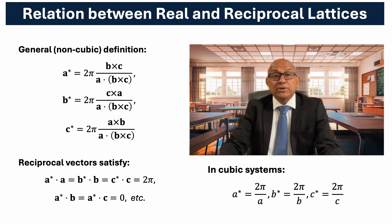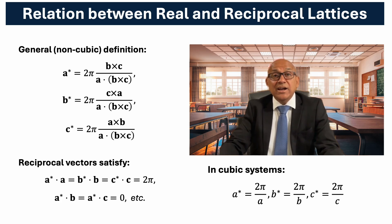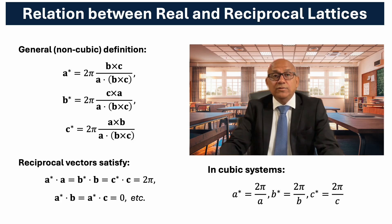A* equals 2π divided by A, B* equals 2π divided by B, and C* equals 2π divided by C. Understanding these general relations is important because diffraction and Bragg reflections are expressed most naturally in reciprocal space defined this way.